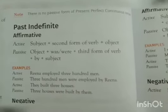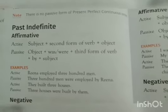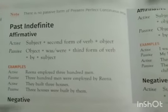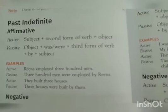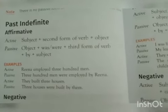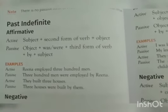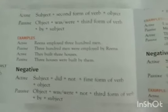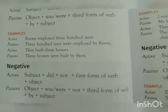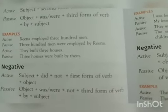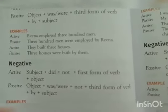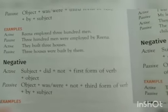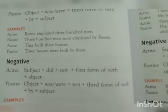Next, moving on to past indefinite affirmative active: subject plus second form of verb plus object. In the passive form, the object is used with was or were followed by the third form of verb, plus 'by', plus subject. For example: 'Rena employed 300 men' becomes '300 men were employed by Rena.' 'They built three houses' — note it is B-U-I-L-T because it is past tense — becomes 'Three houses were built by them.'